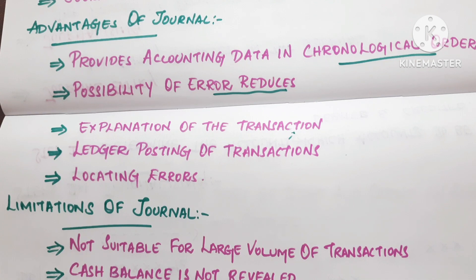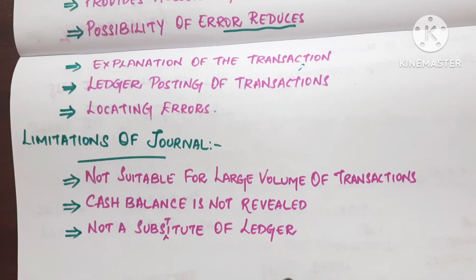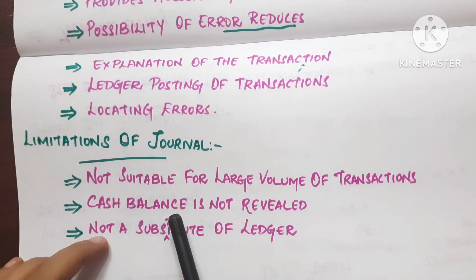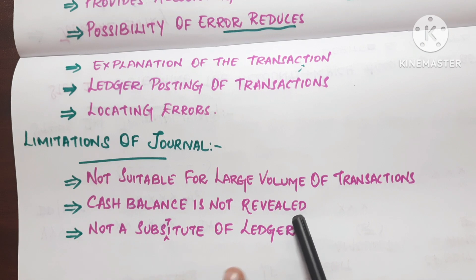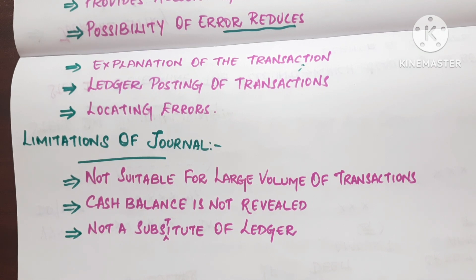The limitations of journal are: it is not suitable for large volumes of transactions, cash balance is not revealed by the journal, and it is not a substitute for the ledger. Large companies find this journal concept less suitable on its own.